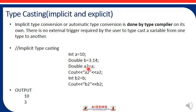Double a2 is assigned from 'a', where 'a' is an integer — so we are converting integer into double. When we print cout a2, the output is 10. Now, conversely, integer b2 is created with data type integer and assigned from 'b', which is a double data type. When we print cout b2, the output is whatever value is stored — since b is 3.14, the output will be 3.